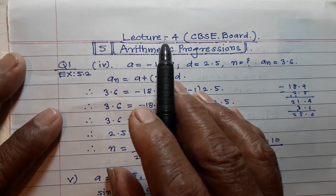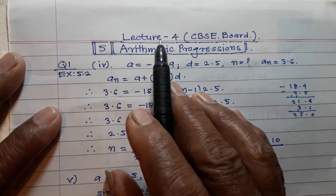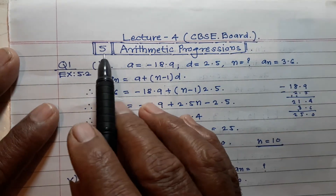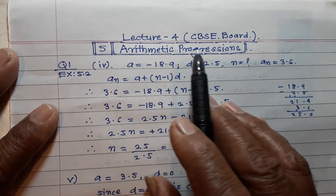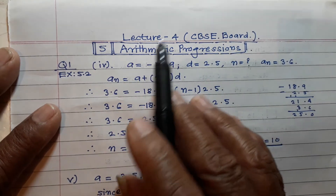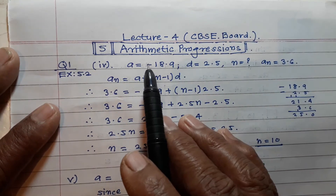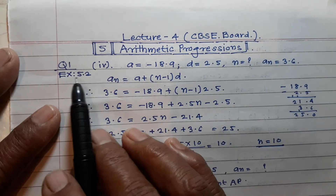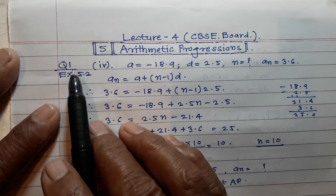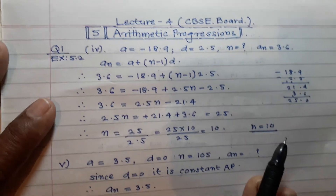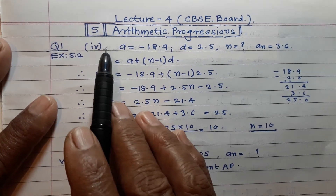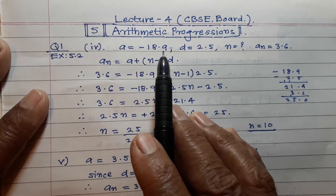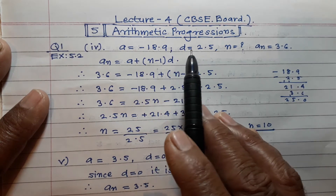Hello my dear students. This is lecture number 4 for CBSE Board, chapter number 5 — Arithmetic Progression. In this lecture I am going to explain some examples from Exercise 5.2, starting with question number 14.